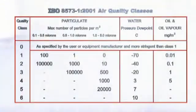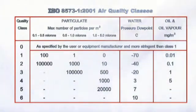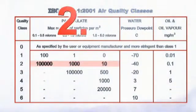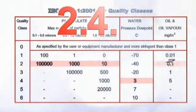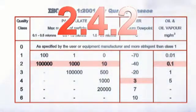Air quality, when defined by the ISO standard, is understood by a three-digit number. The first digit relates to the allowable levels of particulate, the second to water, and the third to oil.